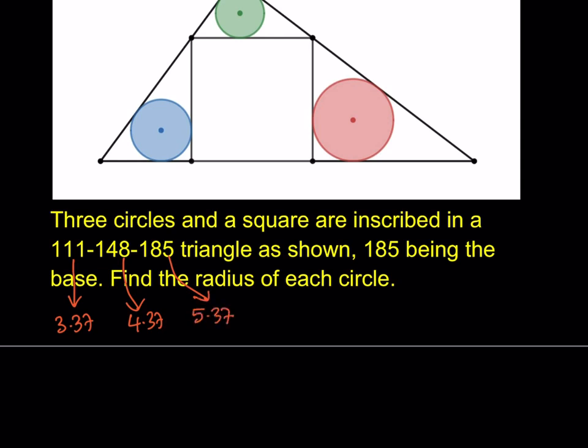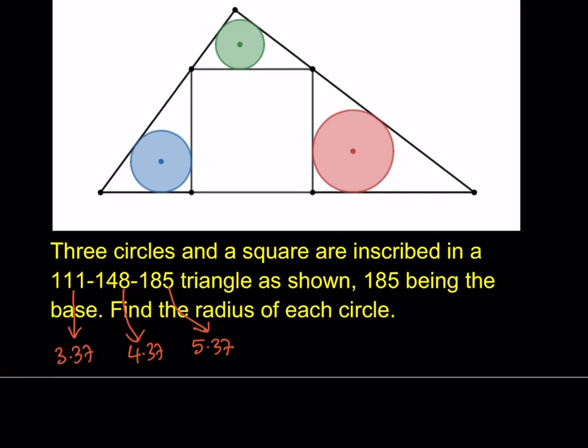So this is basically like a 3, 4, 5 triangle, but just expanded. That means we have a right triangle. And the figure is drawn to scale, so I can mark it as a right angle there, and the base is 185, which is the longest side, the hypotenuse. We're going to find the radius of each circle. In order to find the radius of each circle, we're going to need the side lengths.